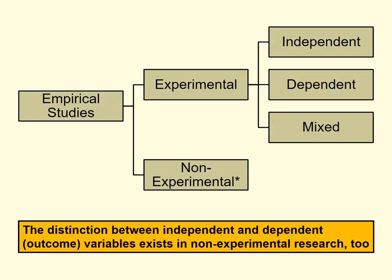A third option is mixed experimental designs — designs with elements of both independent and dependent designs, such as multiple independent groups each measured at multiple time points. The important idea is that experiments can be designed in different ways: independent, dependent, or mixed. We can divide all empirical studies into experimental and non-experimental, and all experimental designs into independent, dependent, and mixed. This distinction between independent and dependent also exists in non-experimental research, though it's less often explicitly labeled.